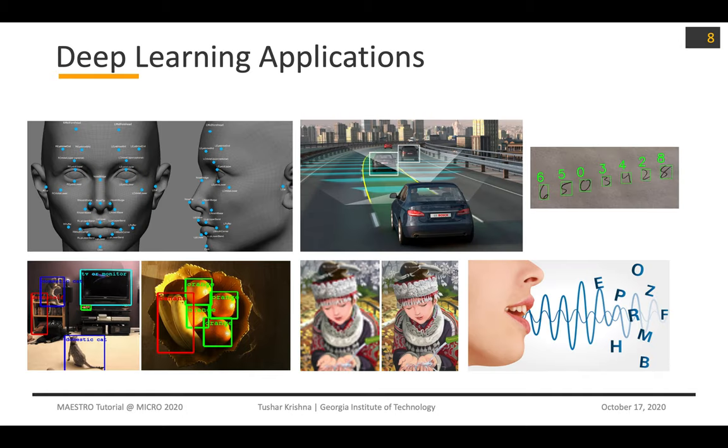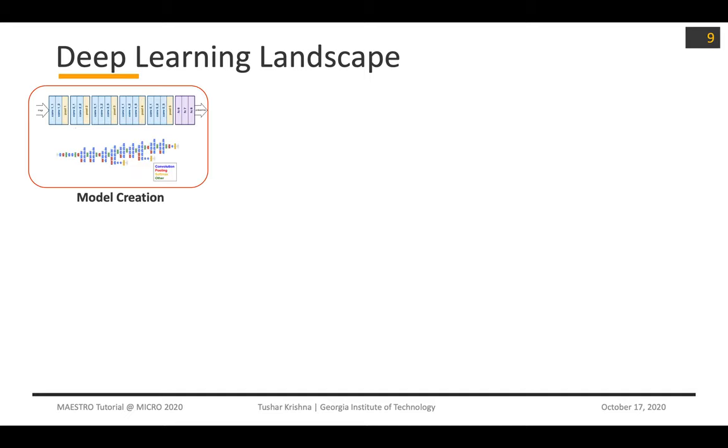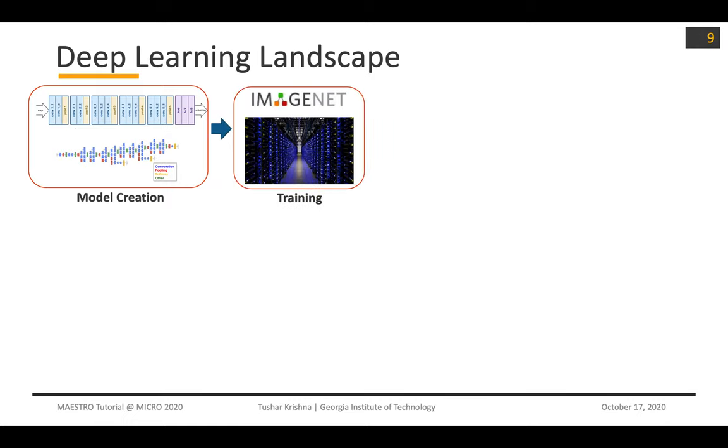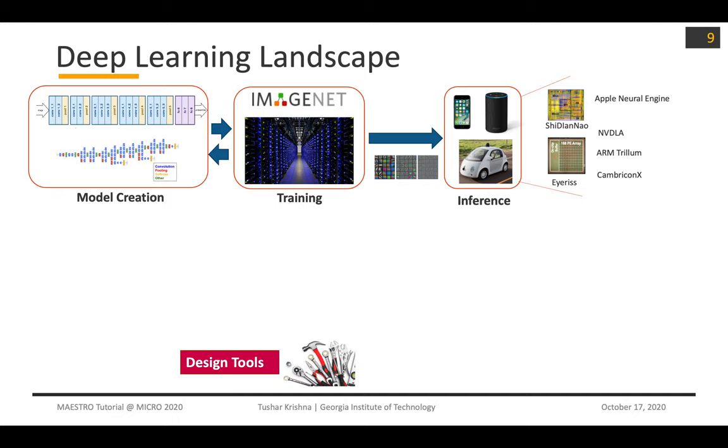What this tutorial is about: Deep learning has made massive strides across applications in vision, speech, language, and recommendation systems. If you look at the deep learning landscape, it works in the following manner: you have a model that you need to create, you train this model with a lot of data. Once you have a trained model, you deploy it for inference. Inference could be on the cloud or on edge devices, and there's a lot of custom accelerators that are being developed to run this inference.